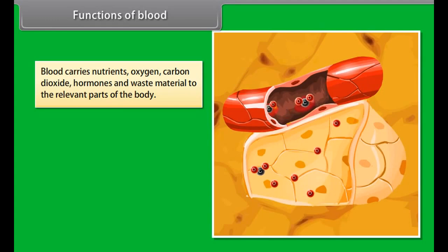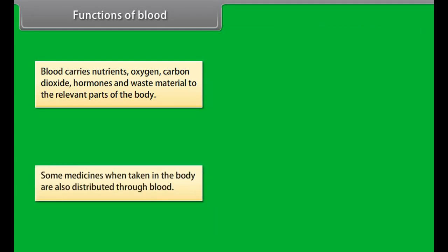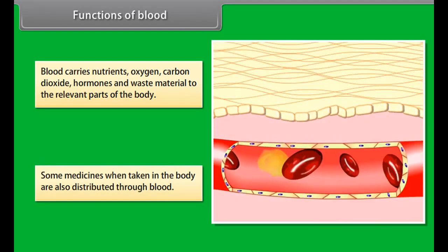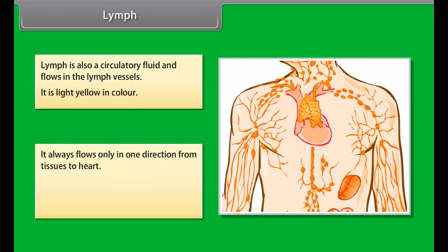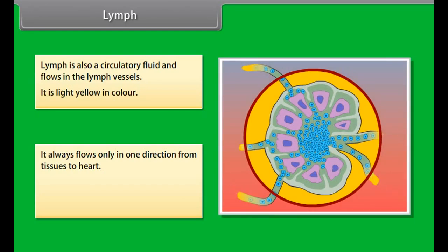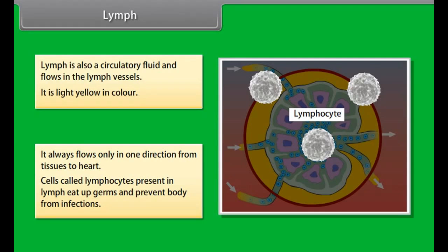Blood carries nutrients, oxygen, carbon dioxide, hormones and waste material to the relevant parts of the body. Some medicines taken into the body are also distributed through blood. Lymph is also a circulatory fluid that flows in lymph vessels and is light yellow in color. It always flows in one direction, from tissues to the heart. Lymphocytes present in lymph consume germs and prevent the body from infections. Lymph also carries digested fats from the intestine to other parts, and returns proteins and fluid from circulation to tissues.